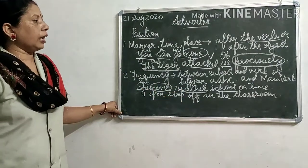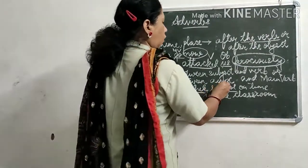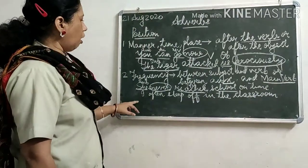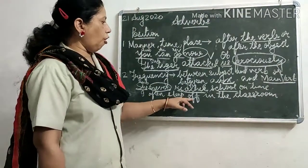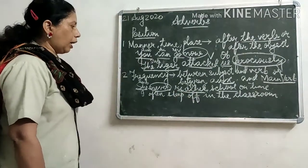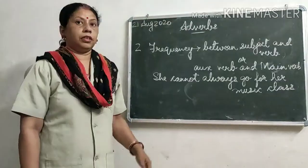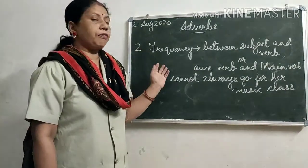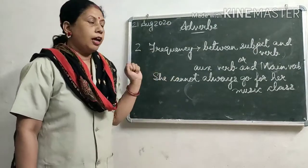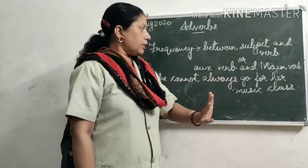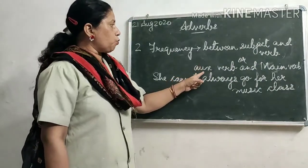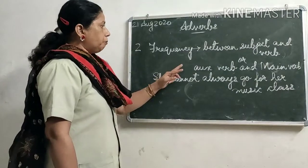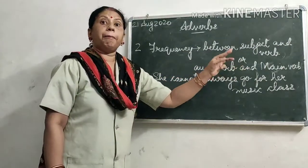The second option is to place the adverb of frequency between the auxiliary verb and the main verb. For example, 'I often sleep off in the classroom' — here 'often' is placed between the subject and the main verb.